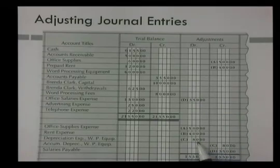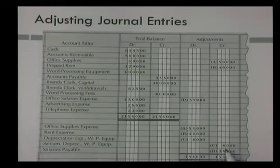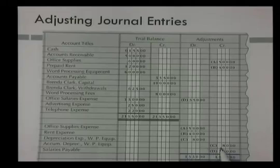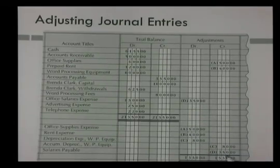The C adjustment is for depreciation on word processing equipment. We debit the depreciation expense — word processing equipment — and we credit accumulated depreciation — word processing equipment. The last one is for salaries that have occurred but we have not paid yet. The D entry is office salaries expense debited, salaries payable credited.